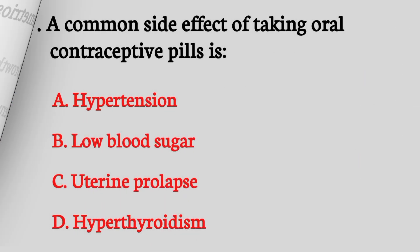Question number seven. A common side effect of taking oral contraceptive pills is? The right answer is option A: Hypertension.